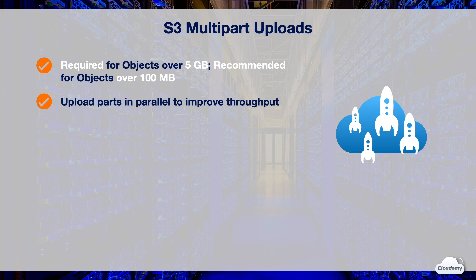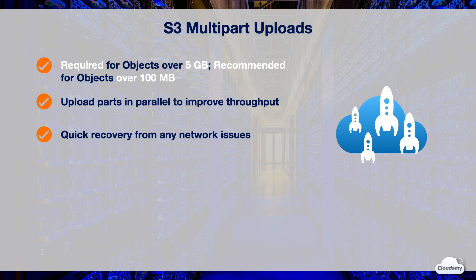Each part is a contiguous portion of the object's data. You can upload these object parts independently and in any order. If transmission of any part fails, you can re-transmit that part without affecting other parts. After all parts of your object are uploaded, S3 assembles these parts and creates the object. Smaller part size minimizes the impact of restarting a failed upload due to a network error, helping you quickly recover from any network interruption.